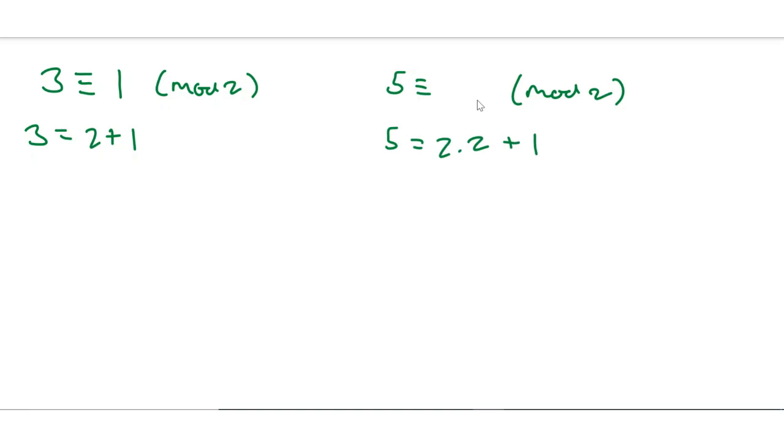So again the remainder is 1. Now let's work mod 4. 7 is congruent to what mod 4? Well, 7 is equal to 1 times 4 plus 3.